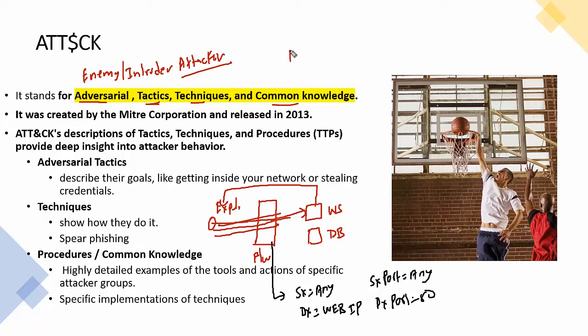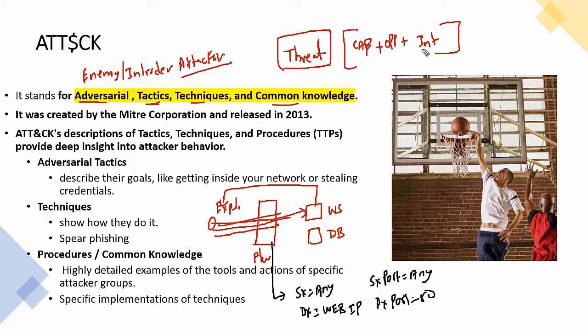We need to focus on attacker behavior and techniques. When talking about threat, it is an action formed from three important parameters: capability, opportunity, and intent. Maximum we can apply controls to limit the opportunity, but we don't have control over capability or intent. As a security professional, we want to understand the attacker's capability — what knowledge they have — and their intention, so we can proactively apply necessary controls.